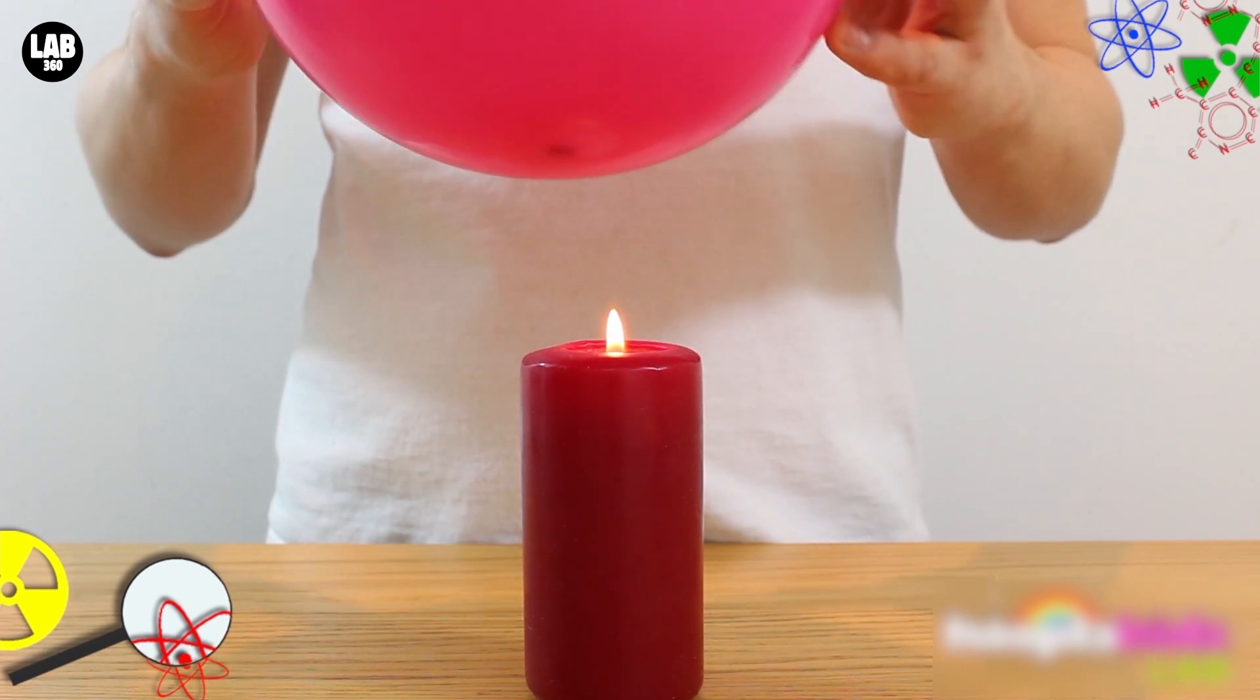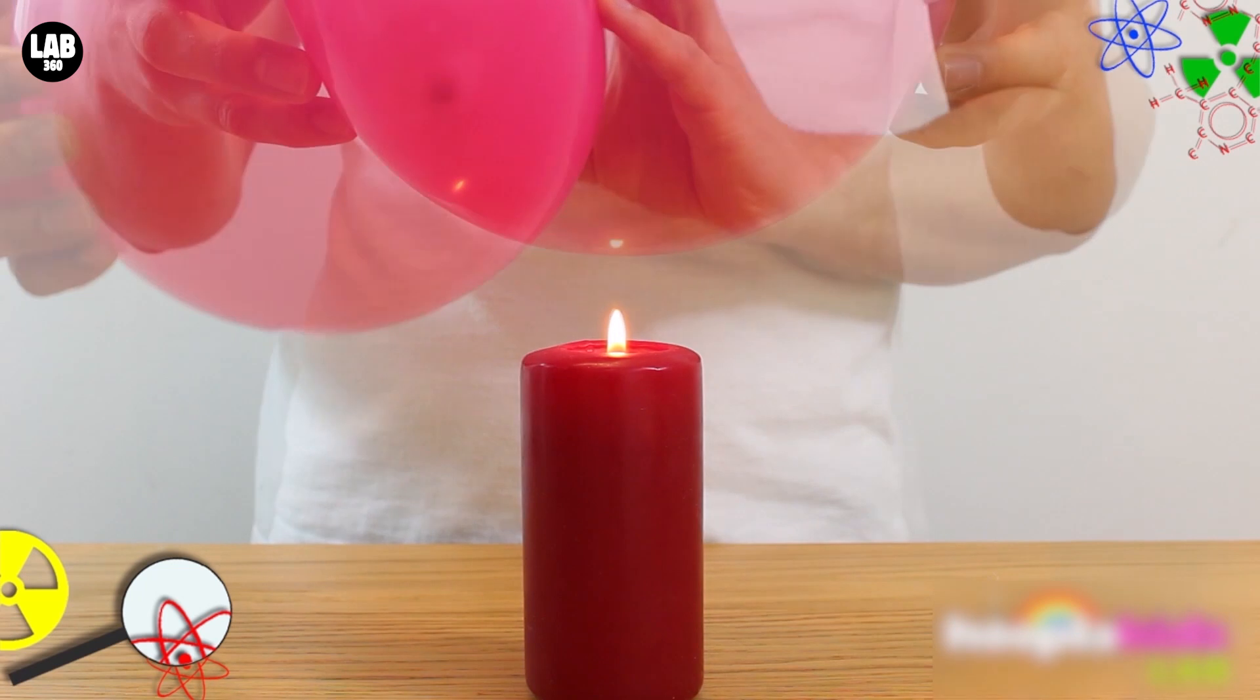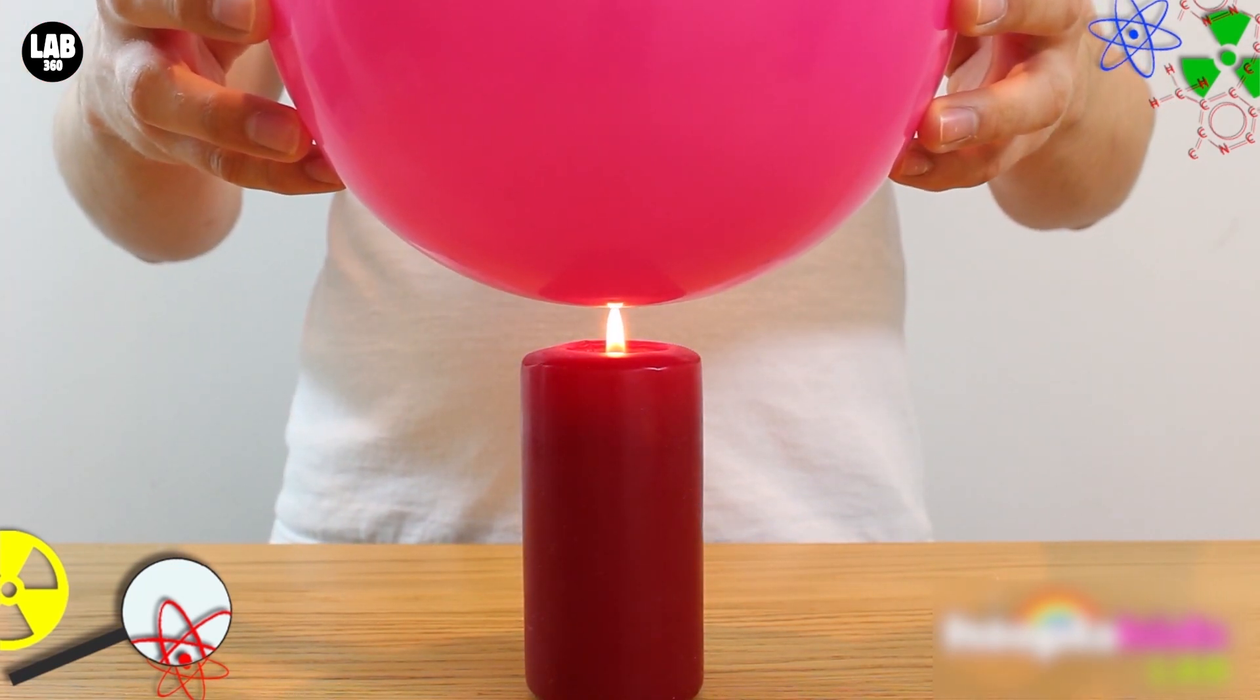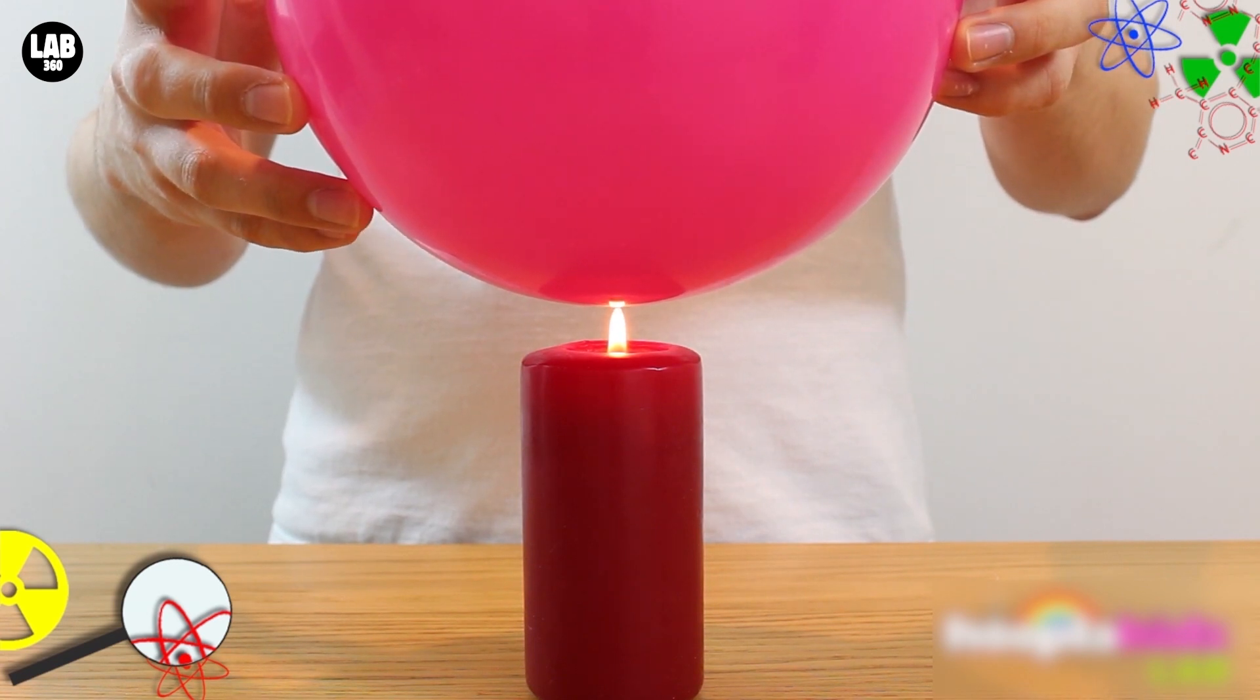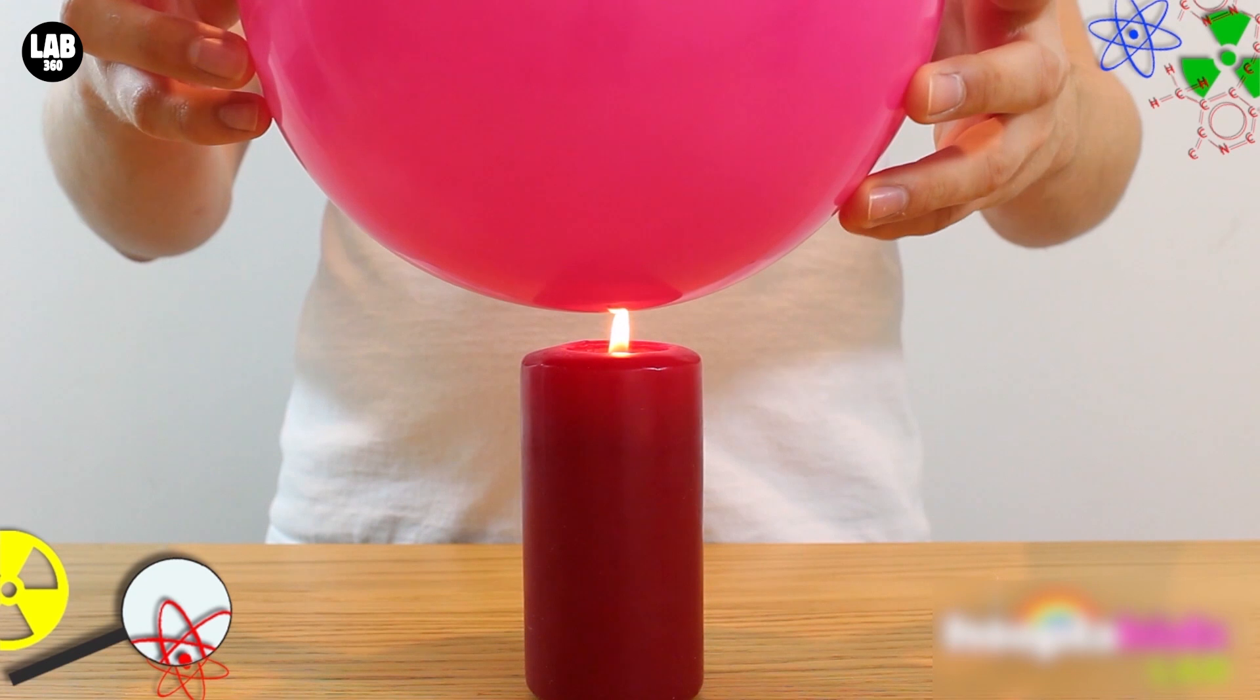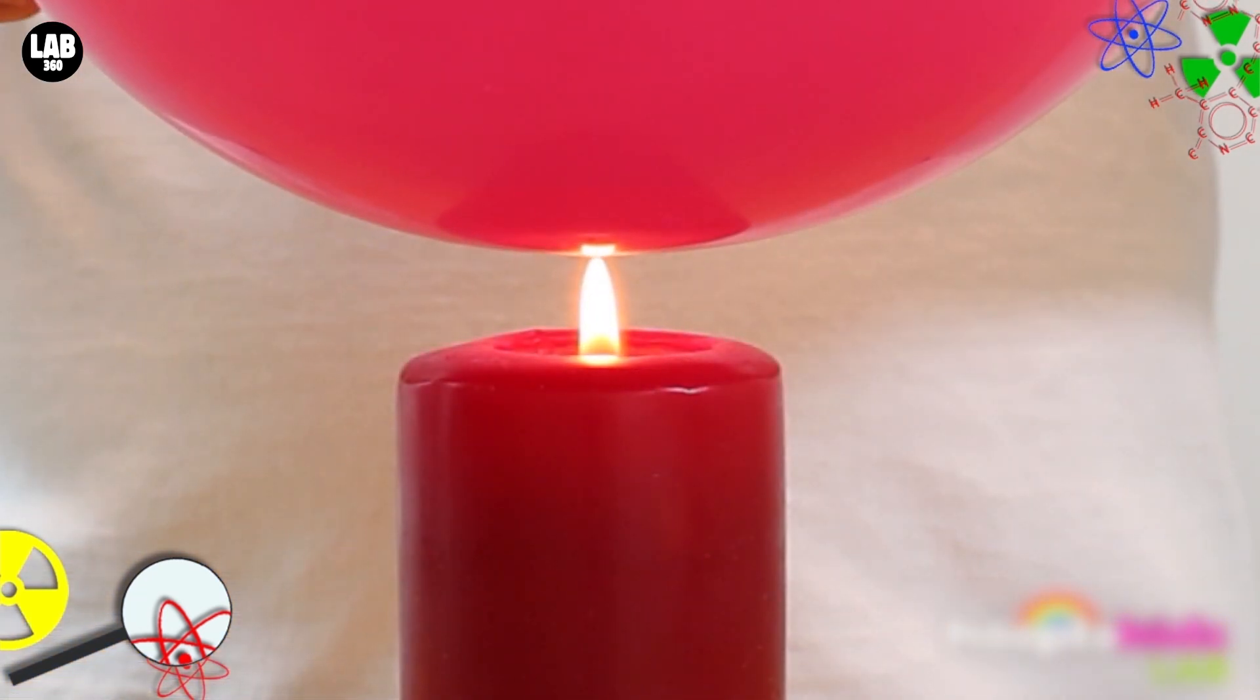The reason this happens is because the water inside the balloon is conducting the heat away from the surface. This means that it doesn't pop. You can very slowly and carefully move the balloon around above the flame, and you'll find that it still doesn't pop. And that's because the water moves with the surface of the balloon.